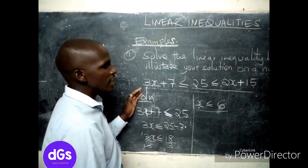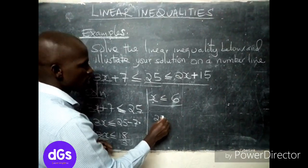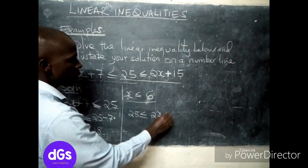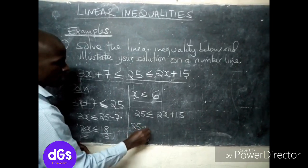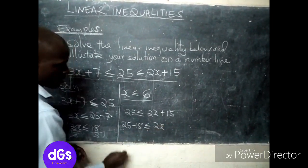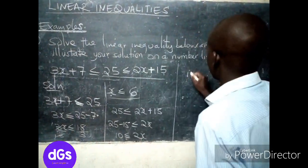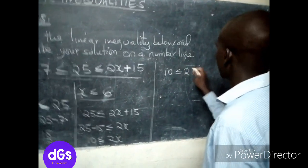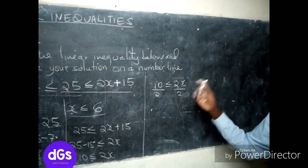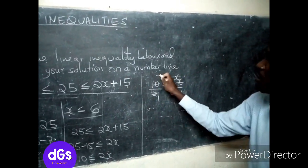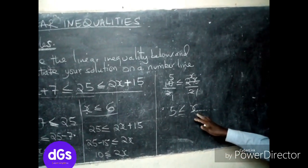Next, we pick the upper part: 25 is less than or equal to 2x + 15. We bring 15 to this side, so 25 minus 15 gives 10, meaning 10 is less than or equal to 2x. Dividing both sides by 2 — a positive number, so the inequality is unaffected — we get 5 less than or equal to x.